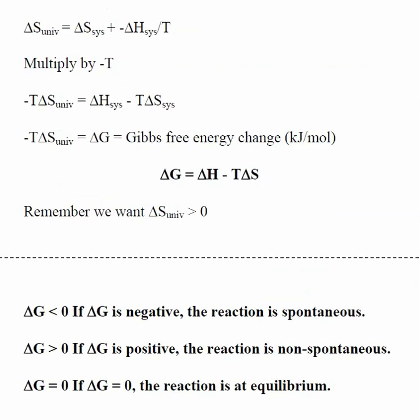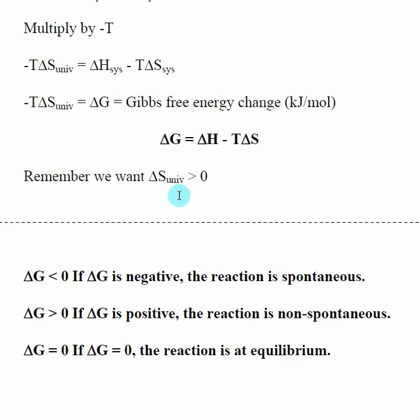And overall, what's going to happen is for a spontaneous process, we want the delta S of the universe to be greater than zero. And that's really what our second law of thermodynamics says. So when we go through and do these calculations, the basic idea is,